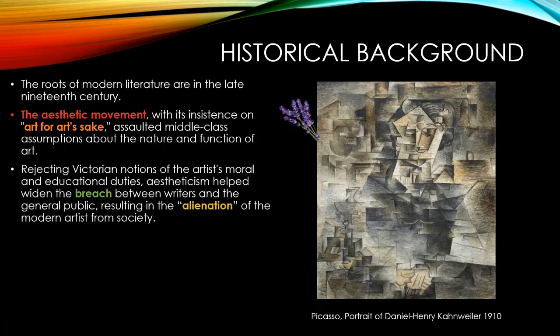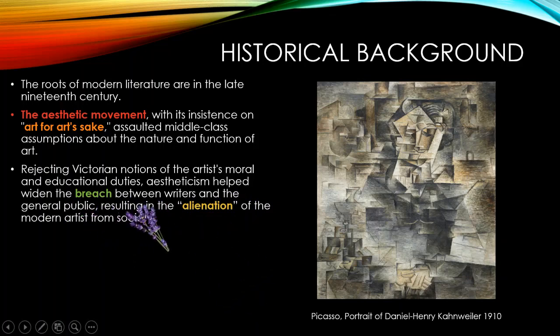Because artists were more engaged with their artwork and the pleasure and impression they would have from it, everything was now based on the impression of the artist. They didn't care whether the audience understood it or not — that is not the function of art. By rejecting Victorian notions of the artist's moral and educational duties, aestheticism widened the breach between writers and the general public, resulting in the alienation of the modern artist from society. Modernist art is an elitist art that relies on the understanding of a small group who share the same codes of meaning with the artist.